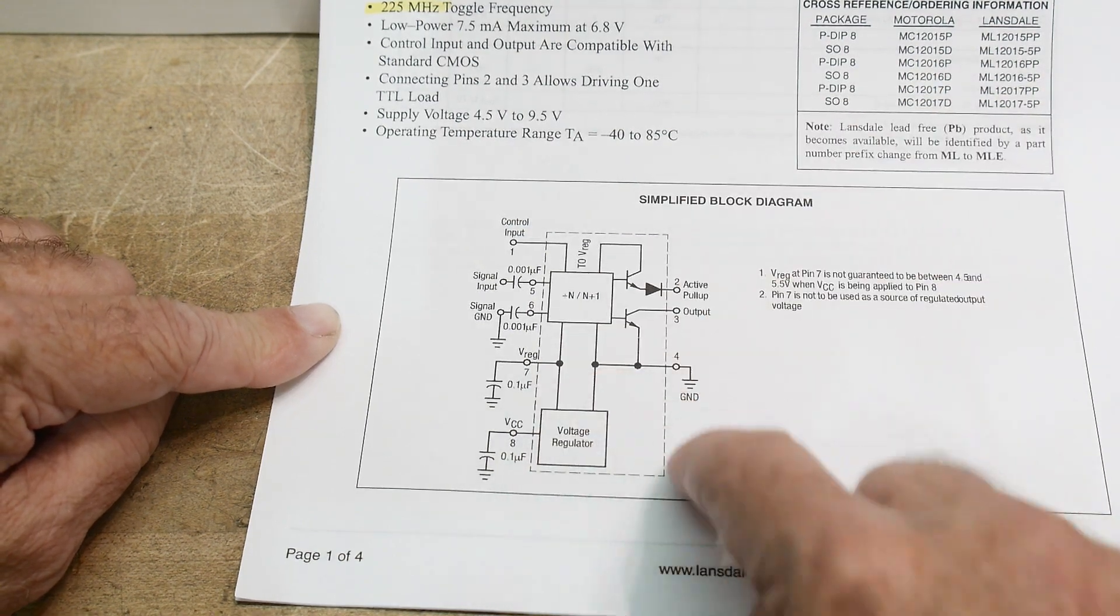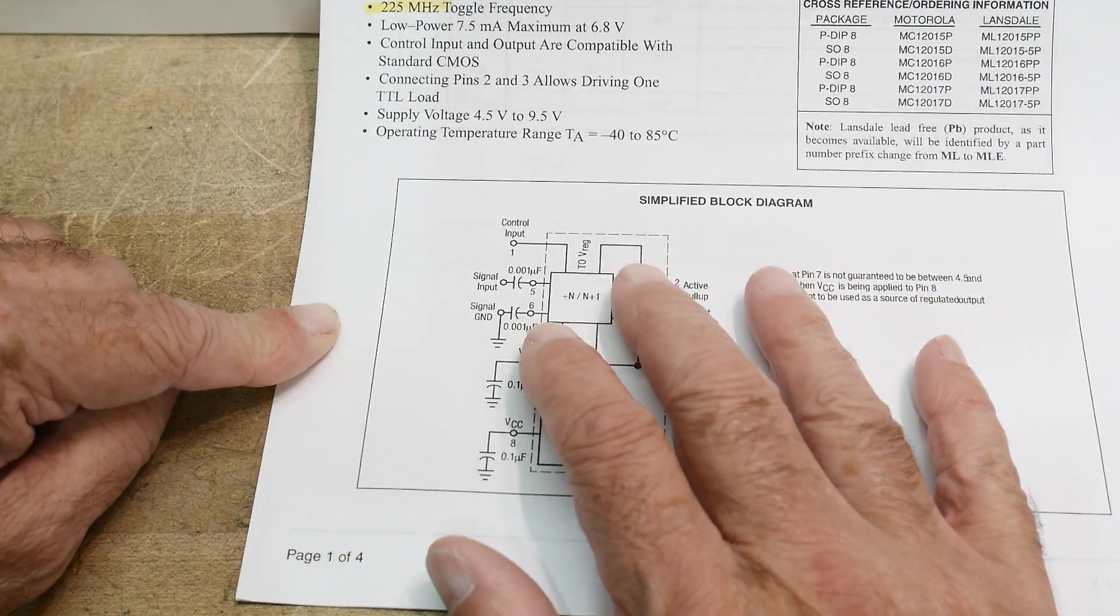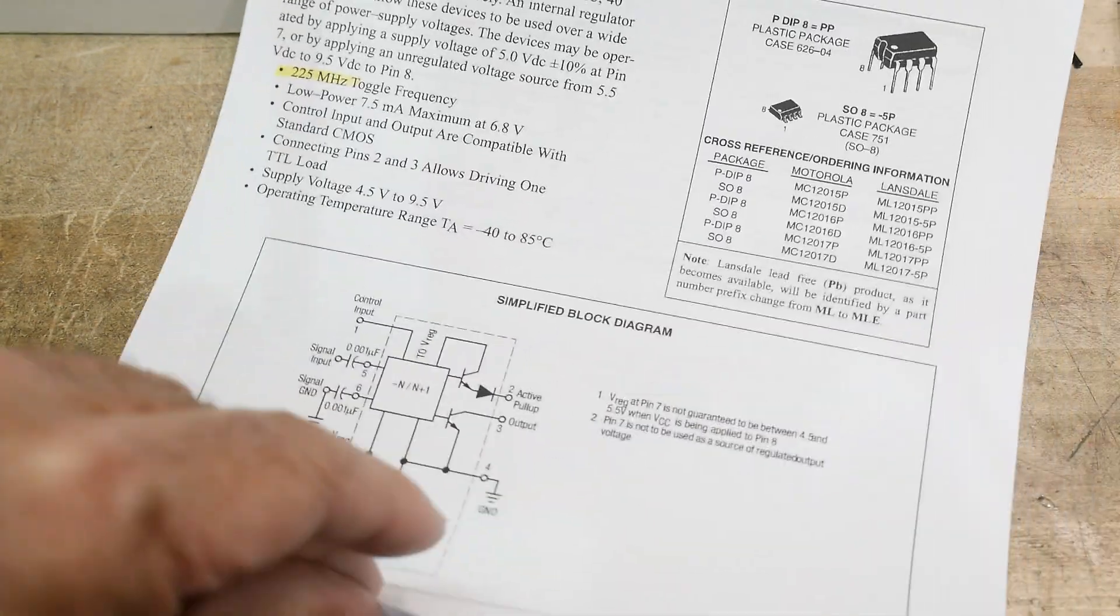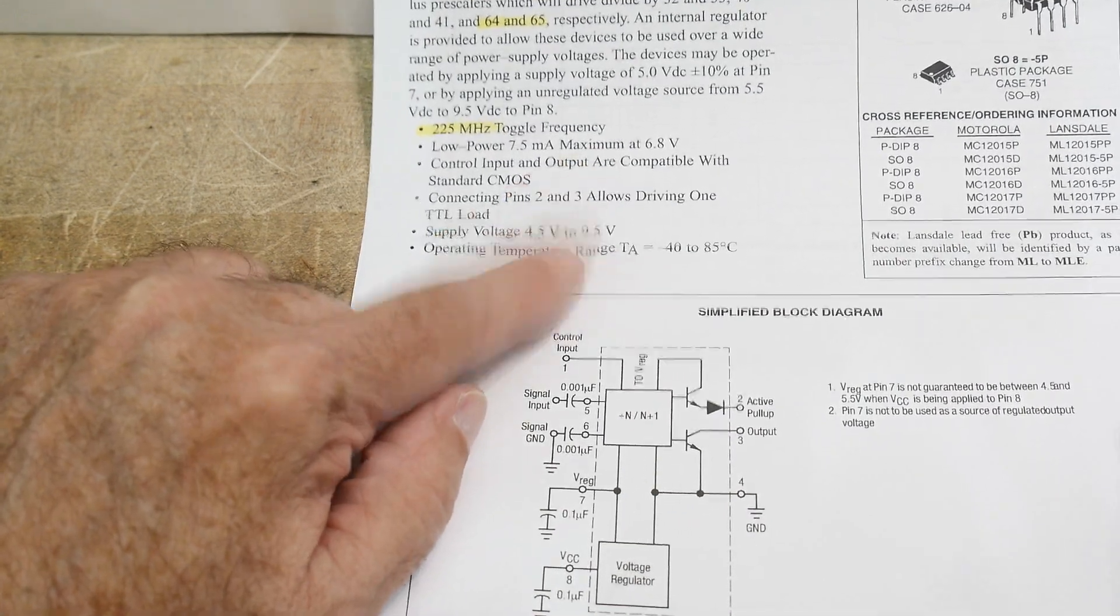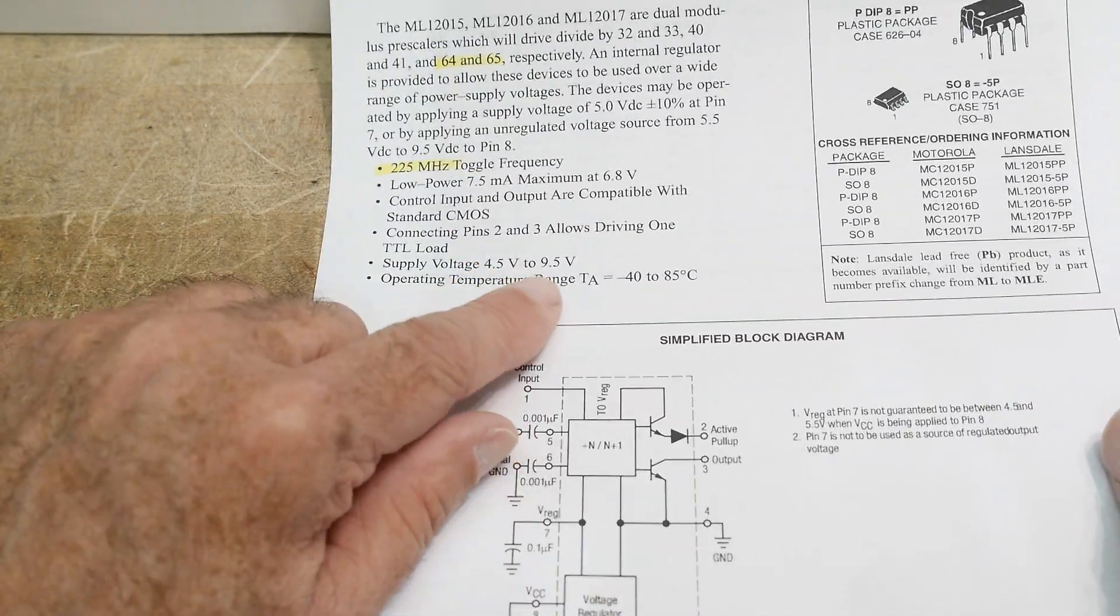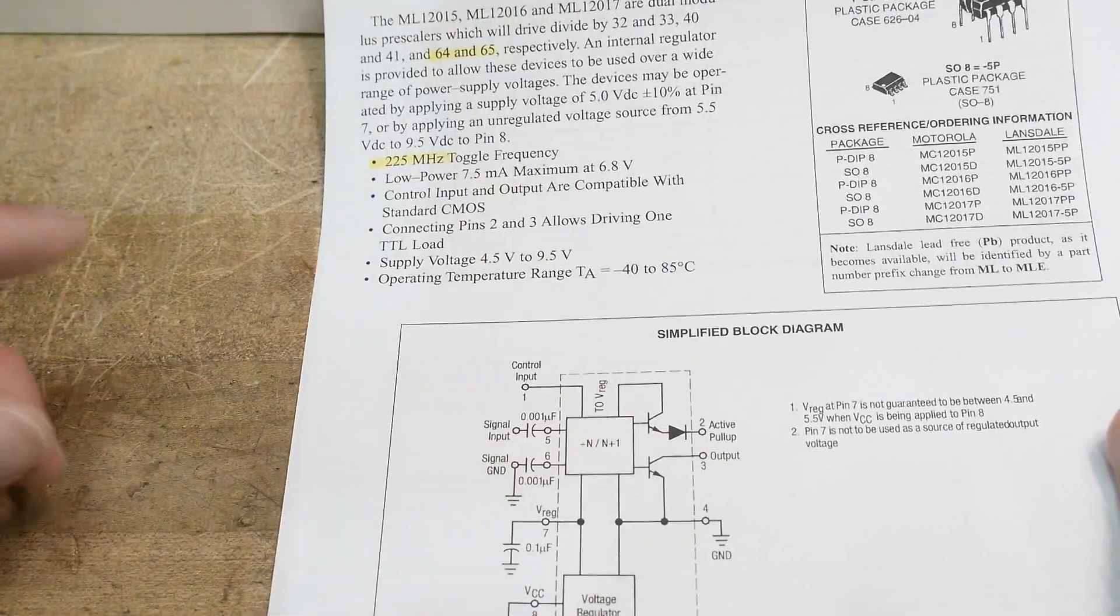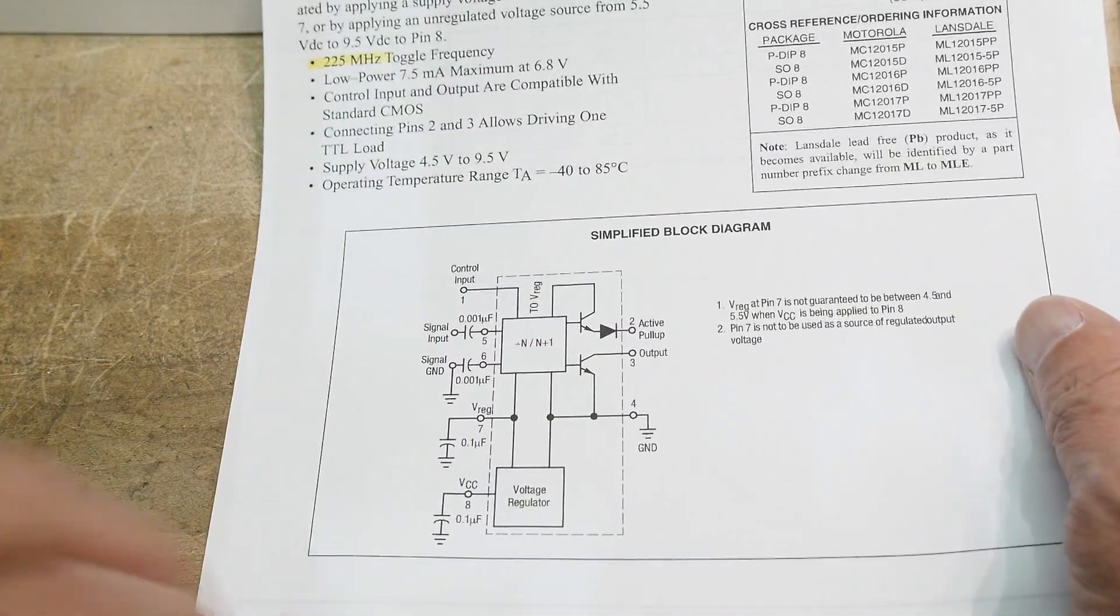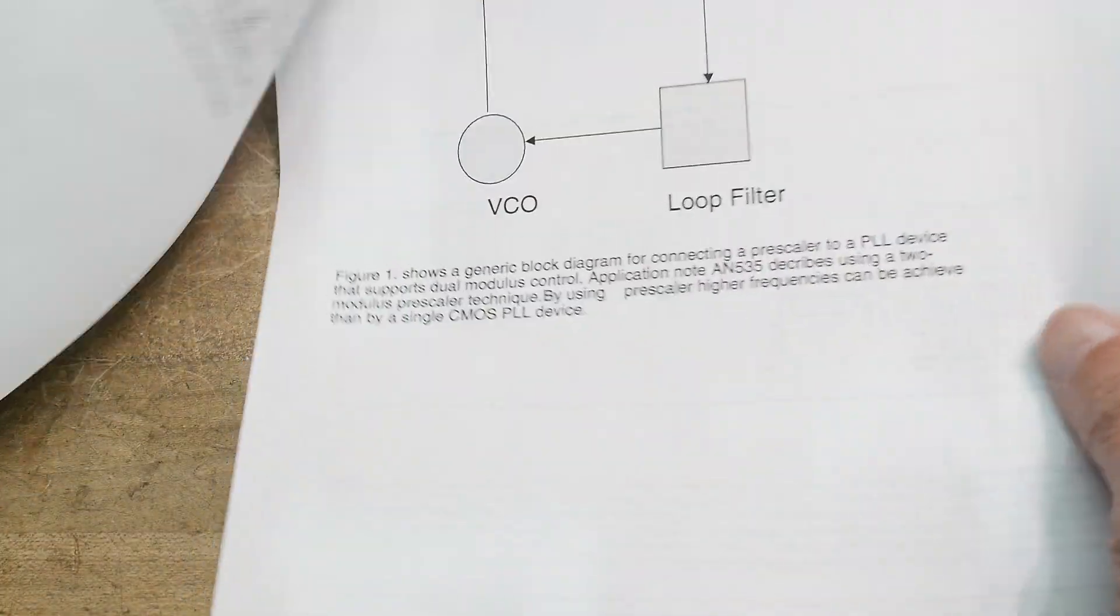So anyway, let's see, what voltage is this part. This part is up to 6.8 volts. Here we go, supply voltage, four and a half to nine and a half volts. Okay. So it'll run either at the eight volt level that we have or the five volt level that we have. You could choose either one for this part. Probably you choose the eight volt one. Probably works better at a higher voltage.